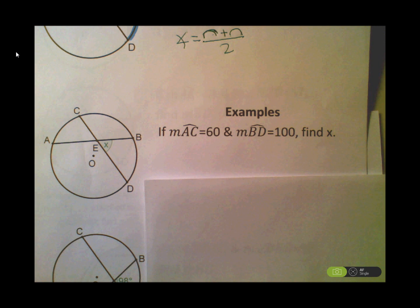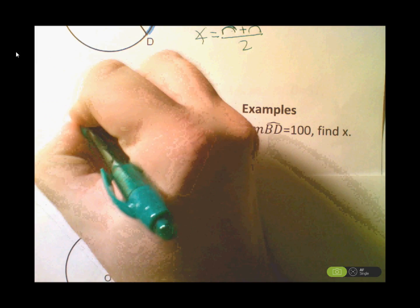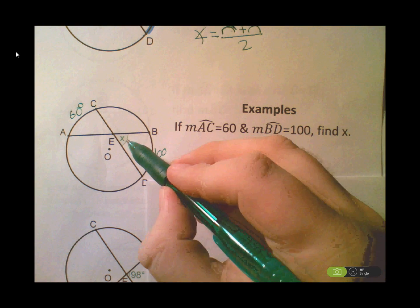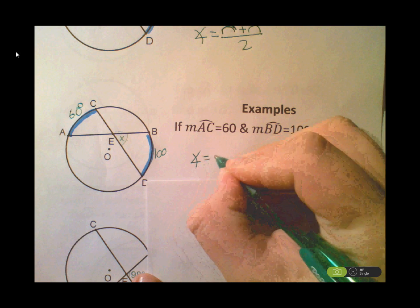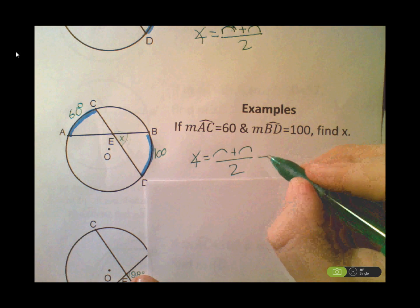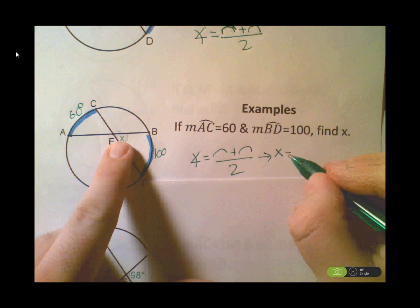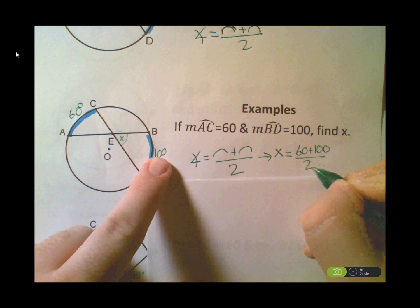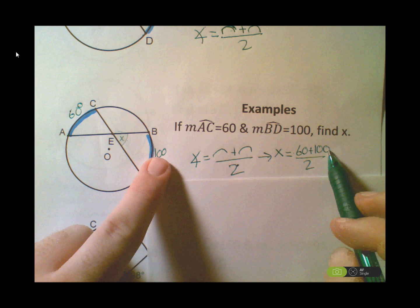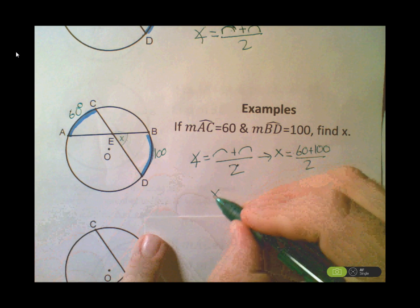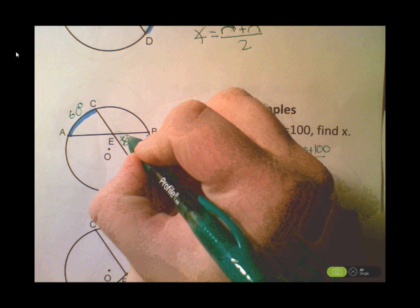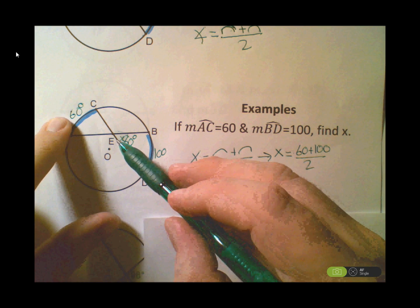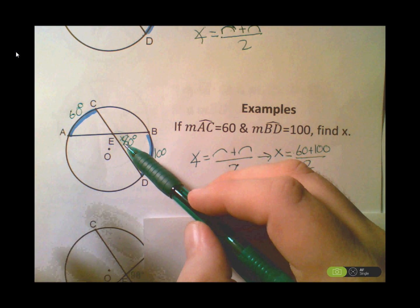This type of question appears on the Regents exam. Example: arc AC is 60 degrees, arc BD is 100 degrees. Find angle x. Using the formula: x = (60 + 100) / 2 = 160 / 2 = 80 degrees. Notice that 80 is directly in the middle of 60 and 100. If you get a number that isn't in the middle, you made an error — go back and fix it.